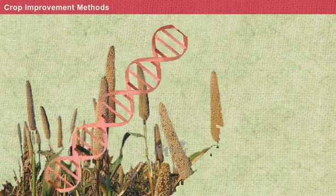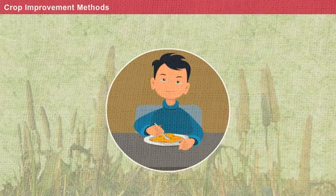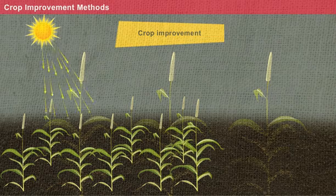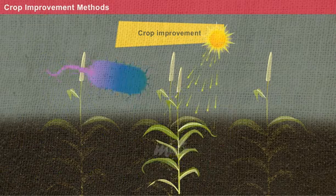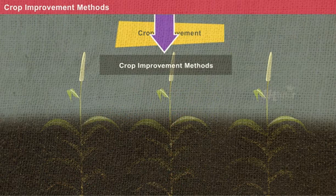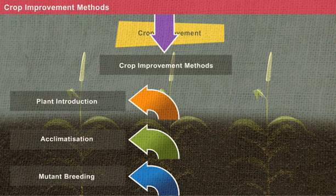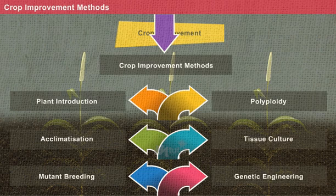Crop improvement is a process through which plants are genetically modified to meet the requirement of humans. Generally, crop improvement procedures are carried out to increase crop yield and create resistance against biotic and abiotic stresses. The crop improvement methods involve plant introduction, acclimatization, mutation breeding, polyploidy, tissue culture, and genetic engineering.